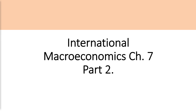Hey guys, welcome back to another video. Today I am covering Chapter 7 of the International Macroeconomics course. This is Part 2. Part 1 I've already posted, and really Chapter 7 covers the ISLM FX model. In Part 1, I talked in depth about how the ISLM model works and how it interacts with the FX market. Now in Part 2, we're going to be looking at the different policy reactions that can be implemented under a fixed and floating regime and then taking a look at a case example. So it's a much shorter video.